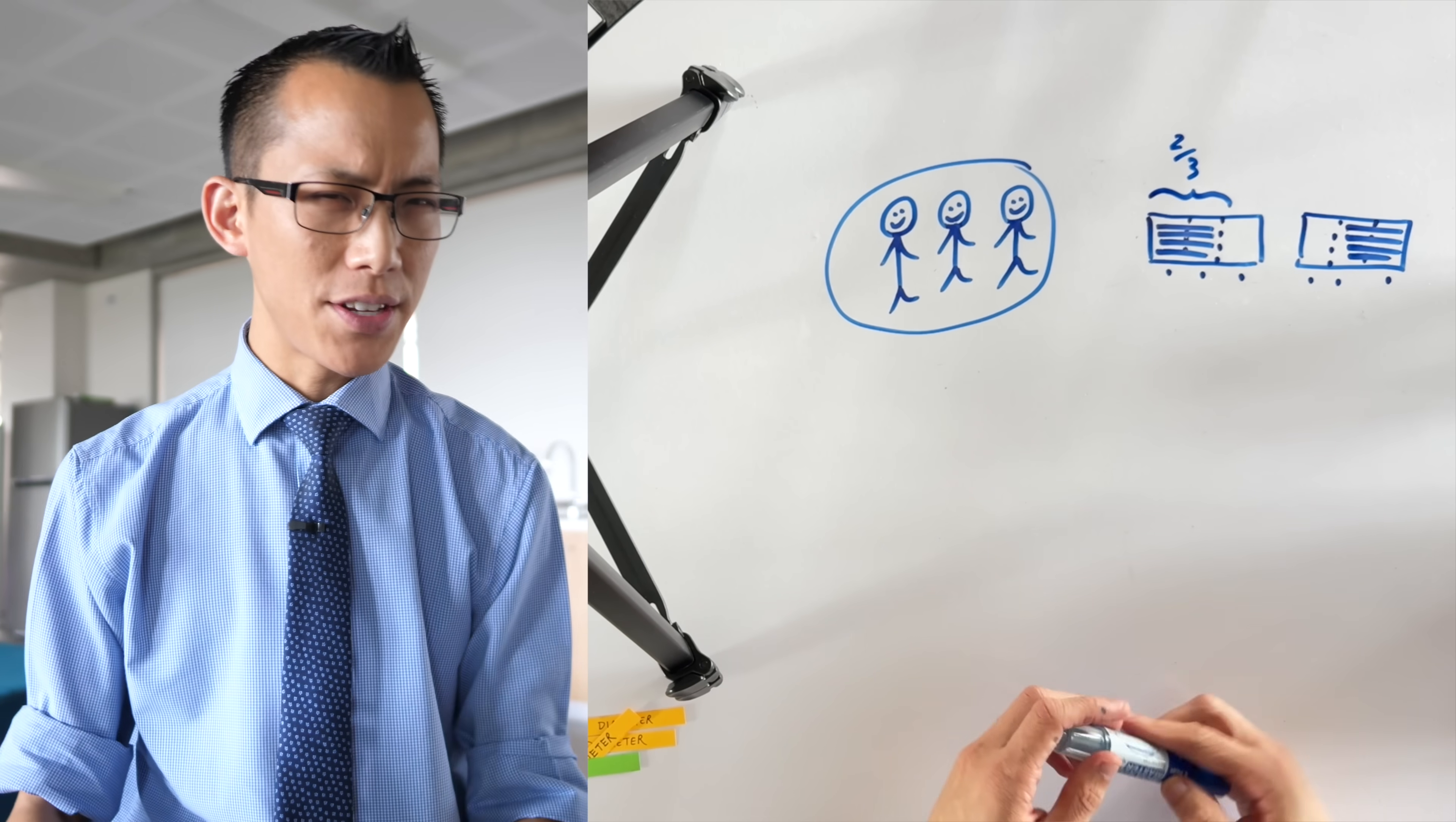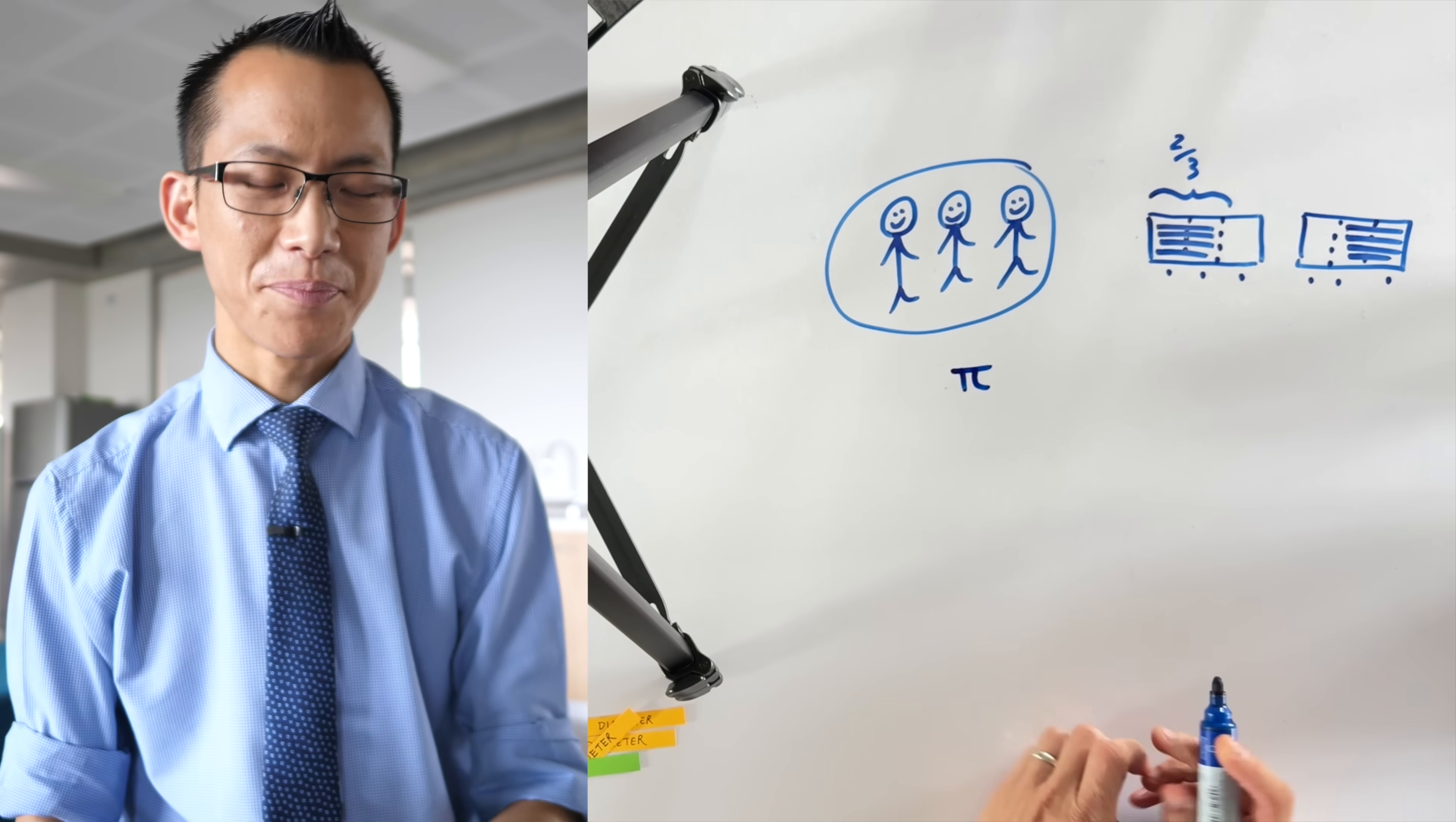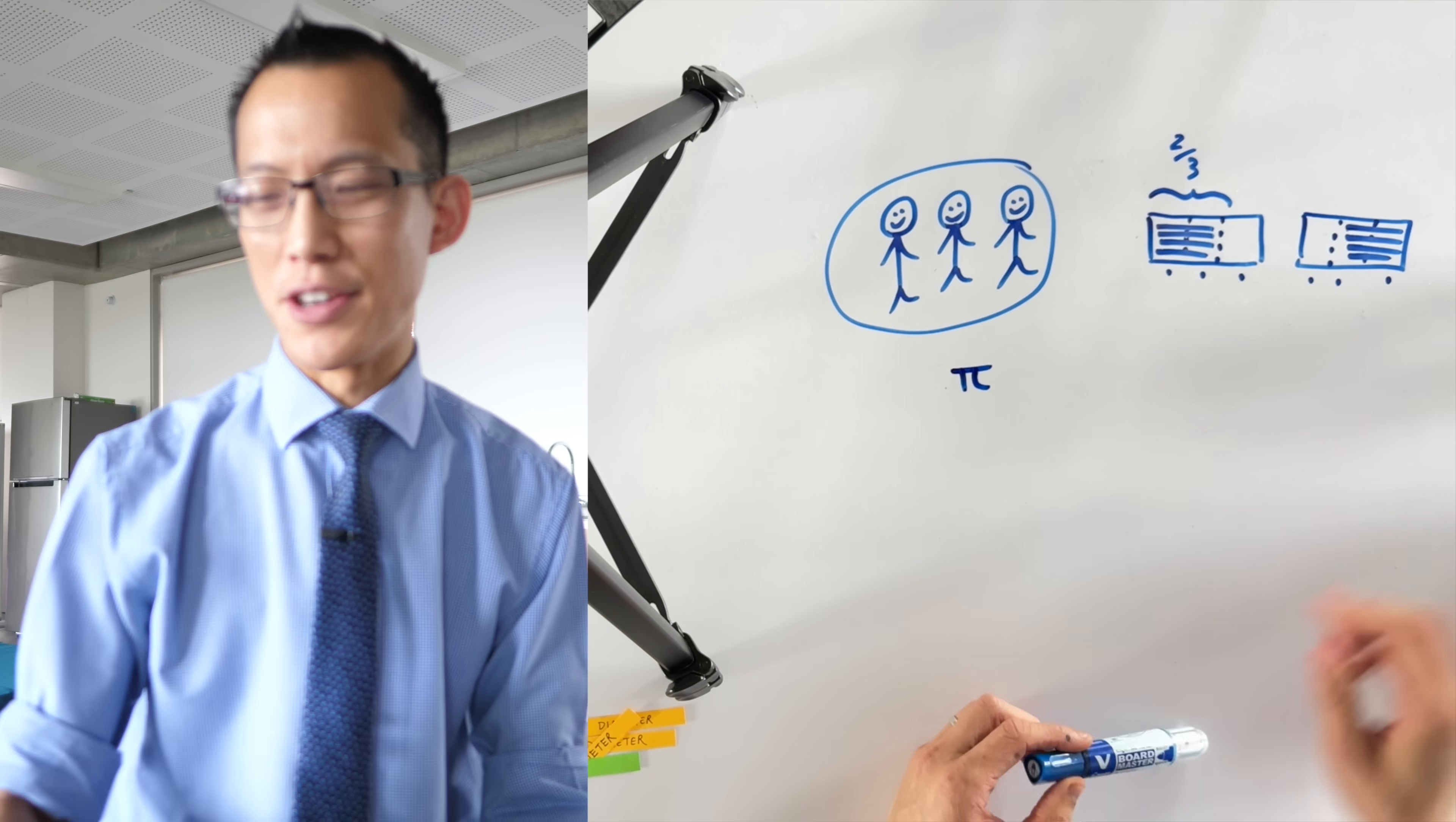So all kinds of different numbers come from different places and the number pi, this is how you write it, it actually comes from measuring circles.